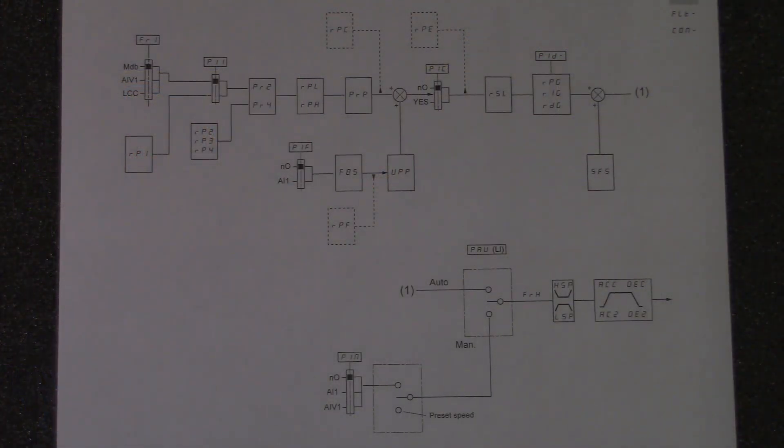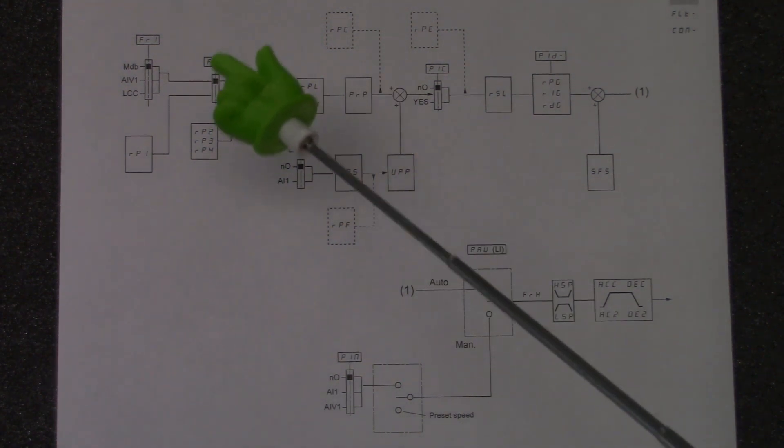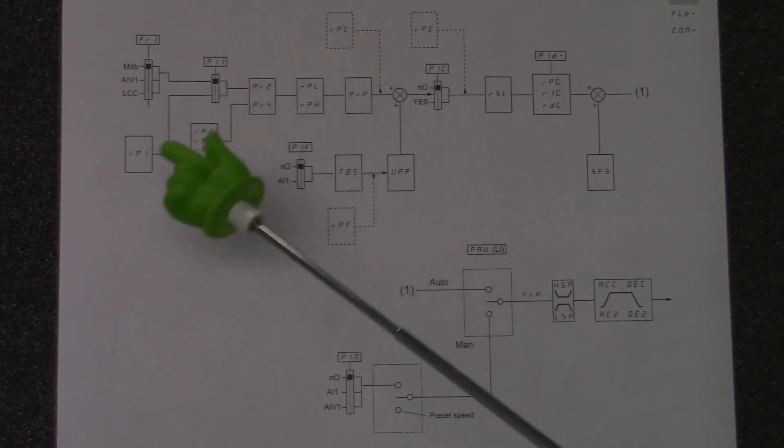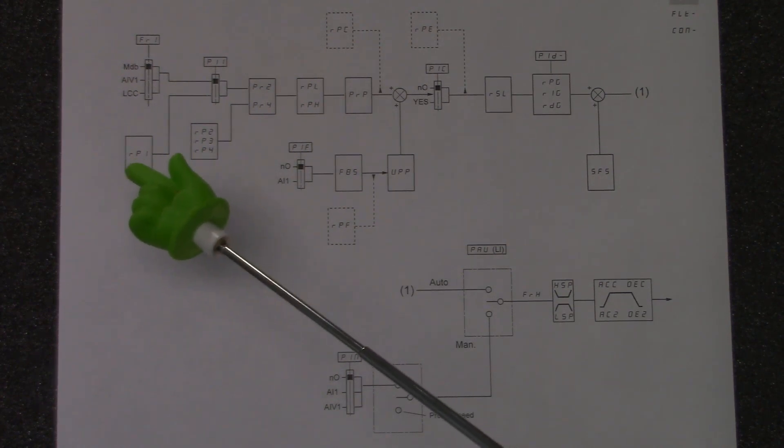Here we have the typical flow chart for our PID loop within the drive. We first start off by looking at our external reference for the speed control. We have the selection of whether it is going to be external or internal reference.